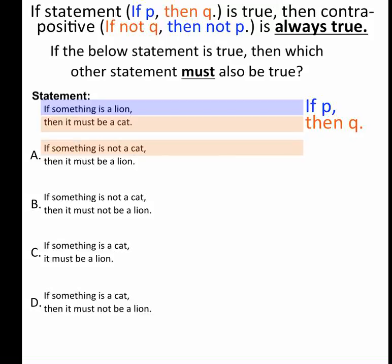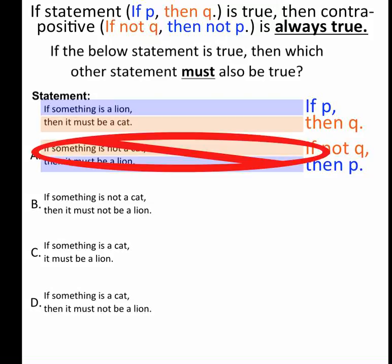Now let's go through our statements. If something is not a cat, if-not-q, then it must be a lion. Well, that's then-p, there's no not there. So that is not my contrapositive, that one isn't correct.